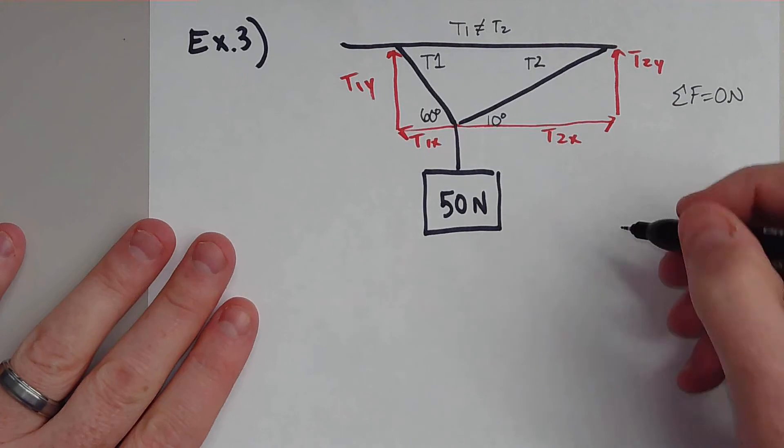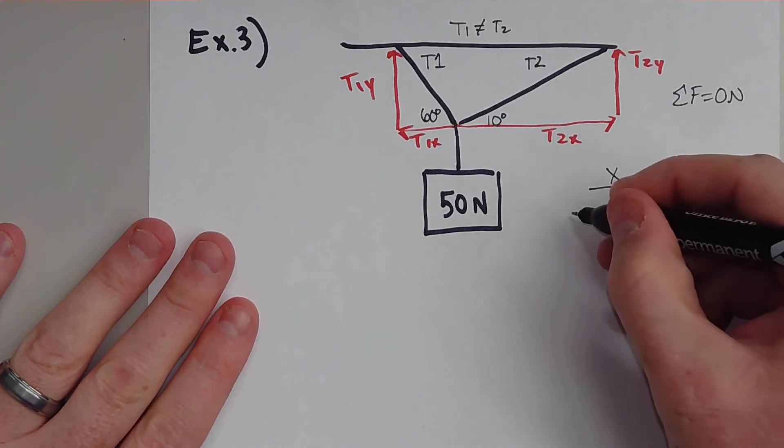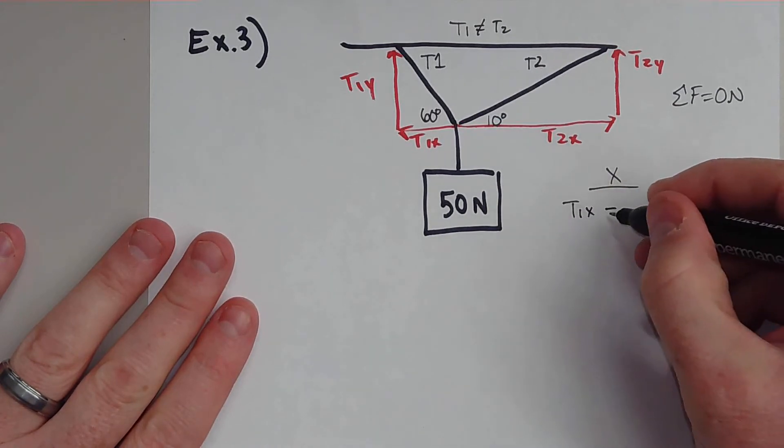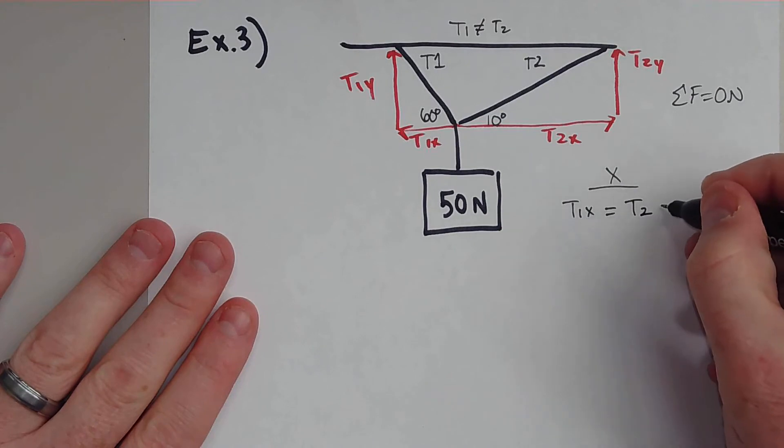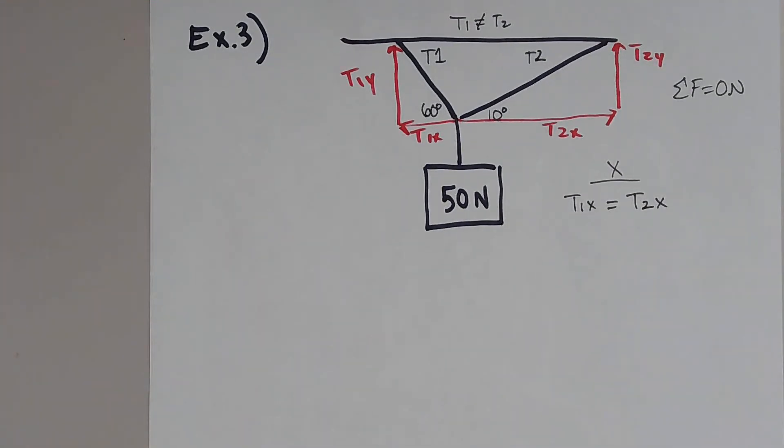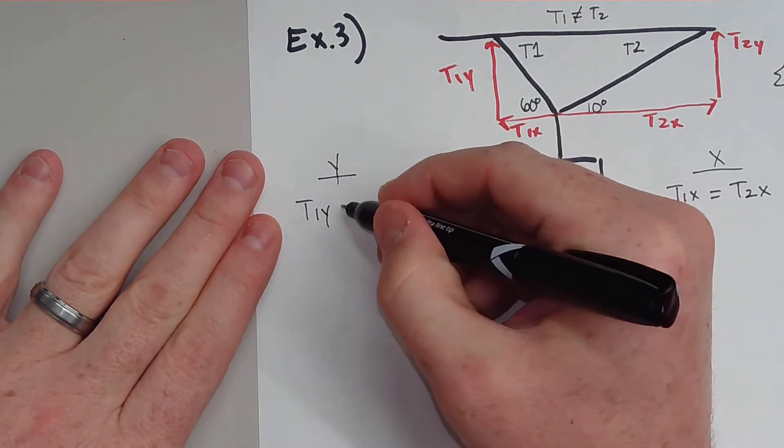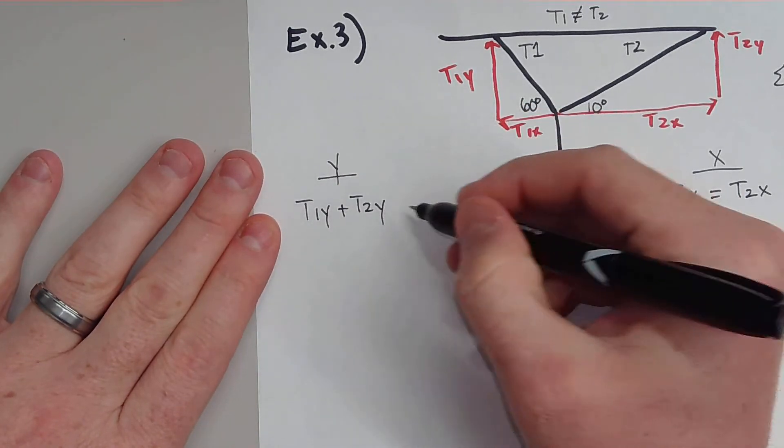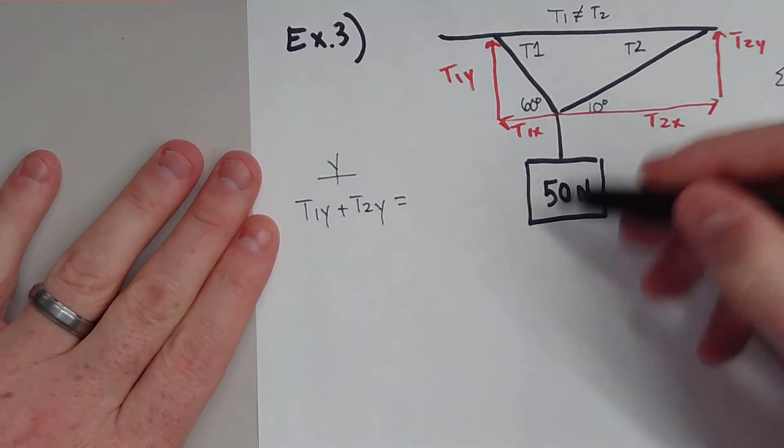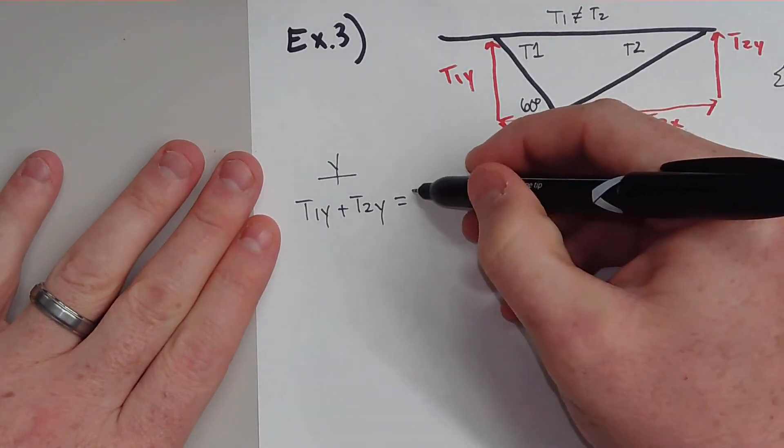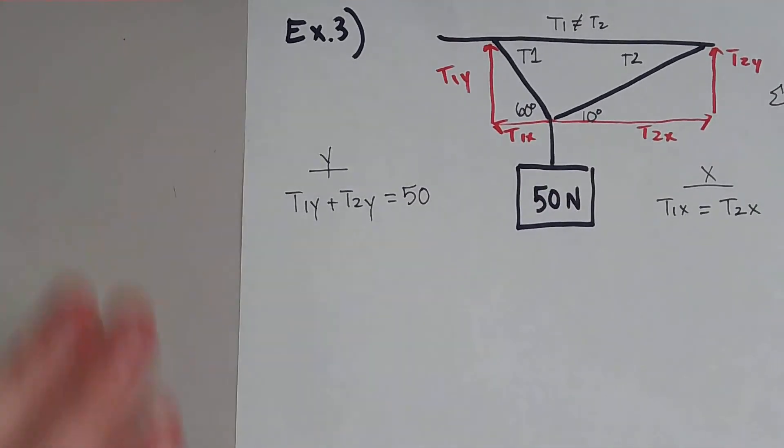So how we're going to tackle this is pretty much the same we've been doing. The whole system is still in equilibrium. So even though things really aren't even, the components, for the most part, have to be the same, particularly the X components do. So in the X direction, we know that T1X must equal T2X. And in the Y direction, T1Y plus T2Y must equal all the weight pulling down. Well, in this case, it's just 50 newtons.